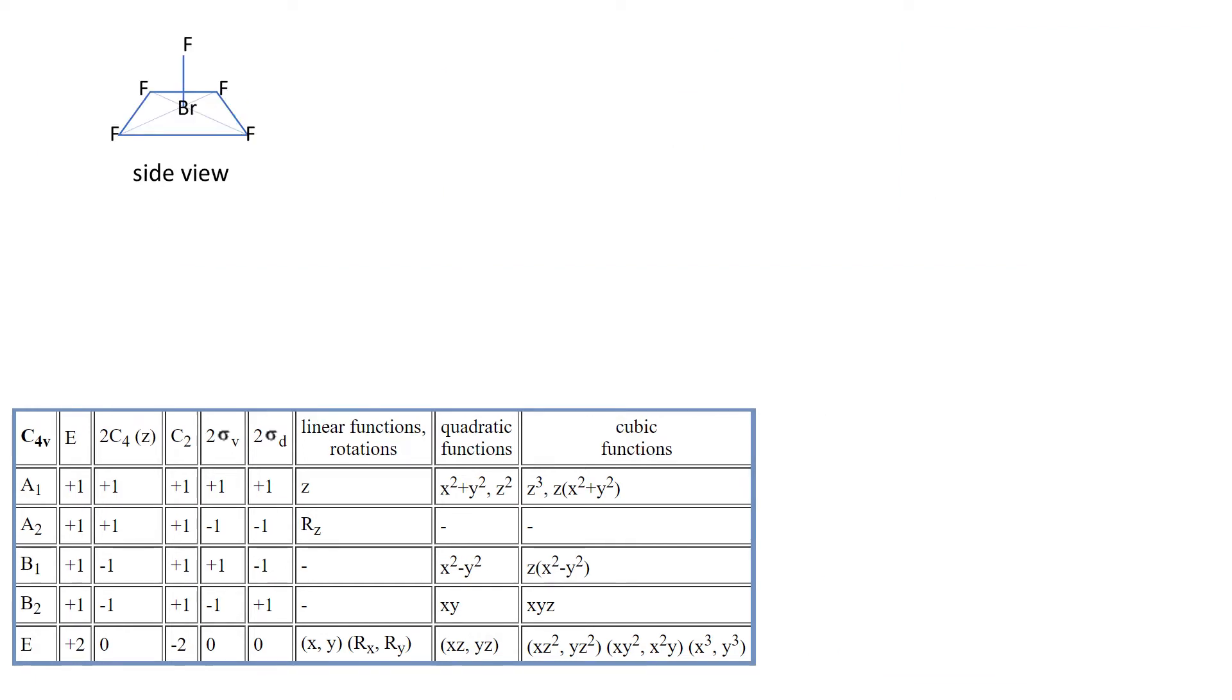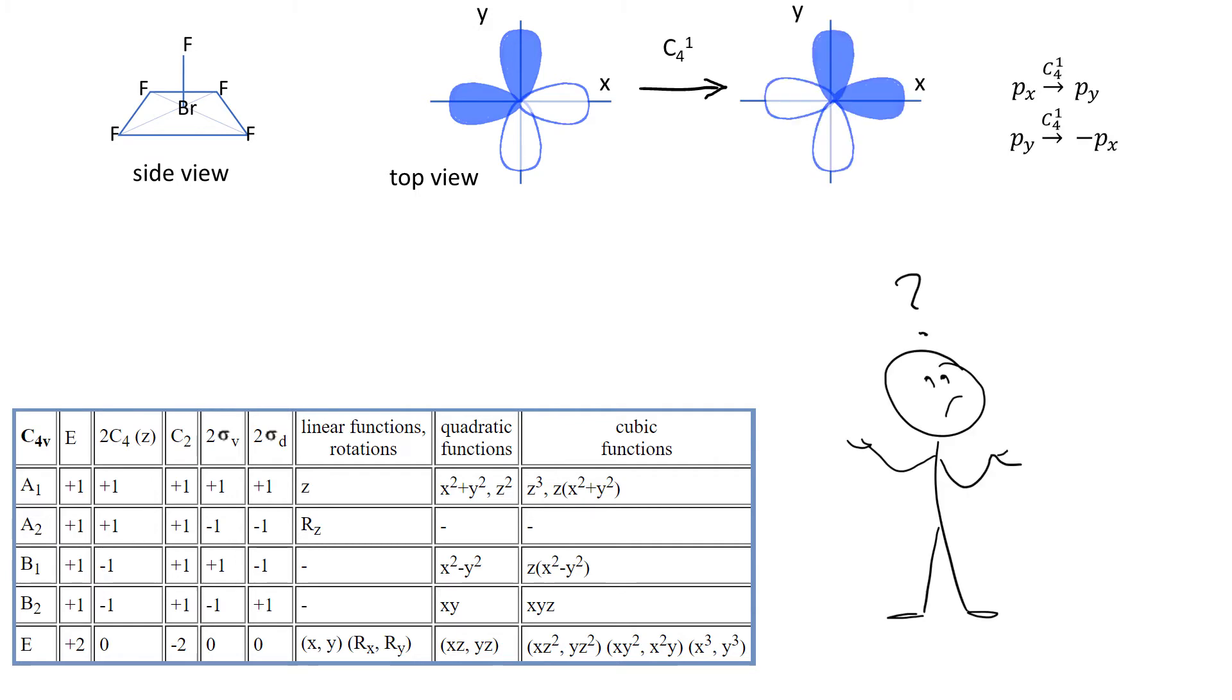So again, let's take some C4V species. Let's look at it from above. Here are the p orbitals on the central atom, and we know how they interconvert under C4. The question is how to write it down using matrices.